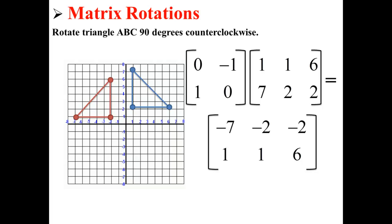Then we plot it on the coordinate plane. Here our red triangle is what we get after we rotate our blue triangle ABC 90 degrees counterclockwise. Now we have performed a matrix rotation.